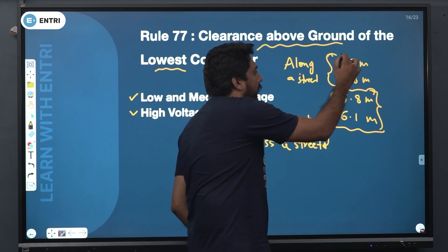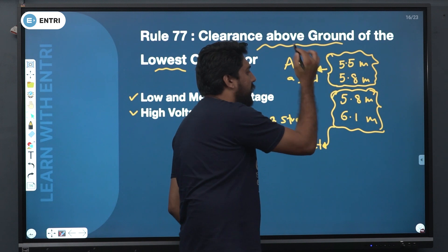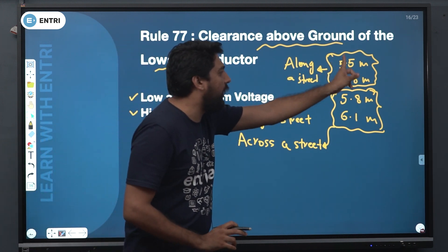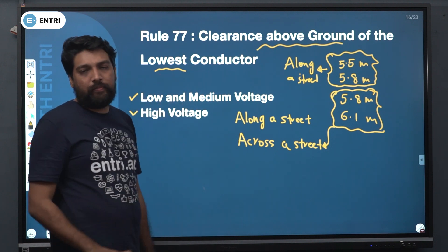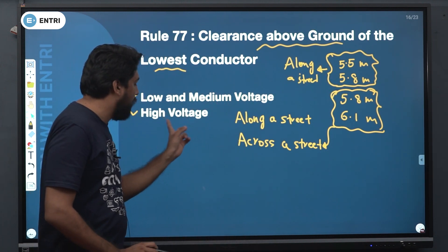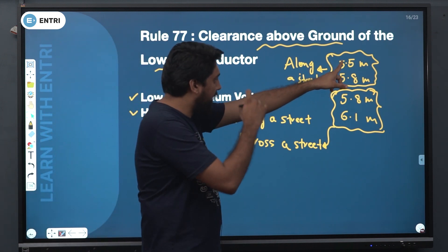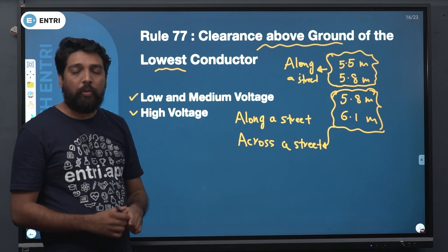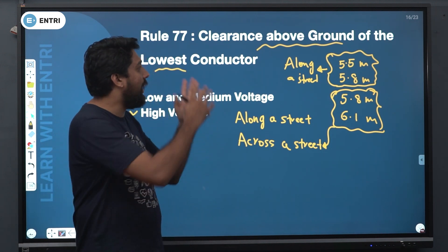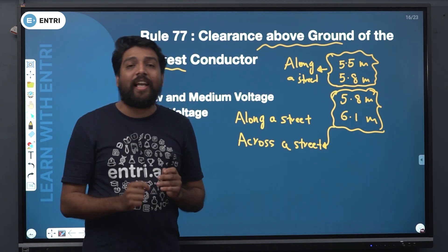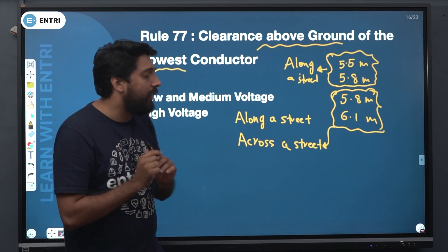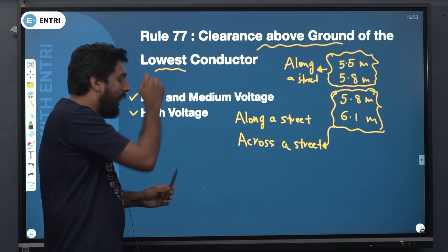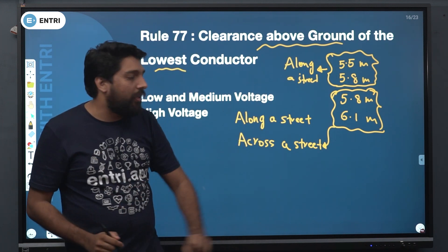So 5.5 and 5.8 relate to along a street. The value 5.5 denotes low and medium voltage; 5.8 along a street denotes high voltage. Along a street: 5.5 for low and medium voltage line with clearance above ground of the lowest conductor is 5.5 meters. In a high voltage line along a street, the clearance above ground of the lowest conductor is 5.8 meters.